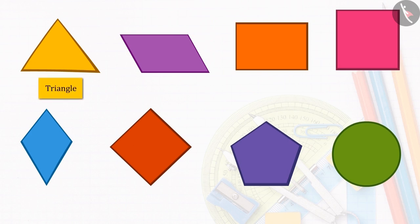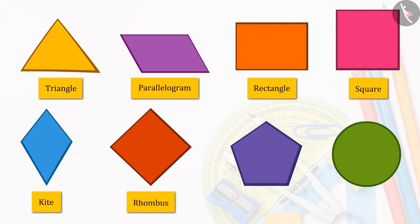Now match your answers. This is a triangle, a parallelogram, a rectangle, square, kite, rhombus, pentagon, and this is a circle. In your previous class, we learned about all these shapes thoroughly.